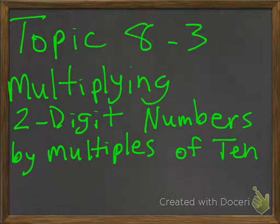Topic 8, Lesson 3: Multiplying 2-Digit Numbers by Multiples of 10. So far you know how to use arrays to find products. In this lesson, you're going to learn a shortcut for multiplying by a number that ends in 0.